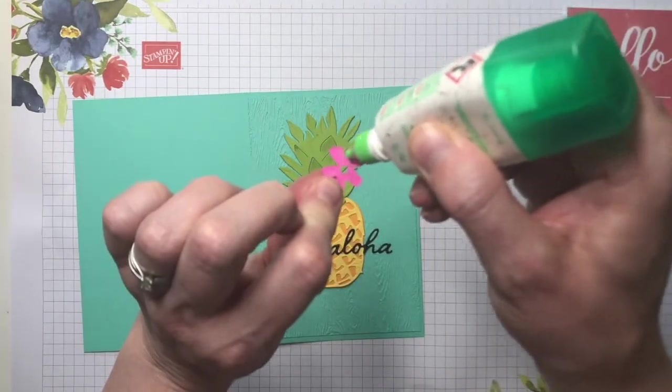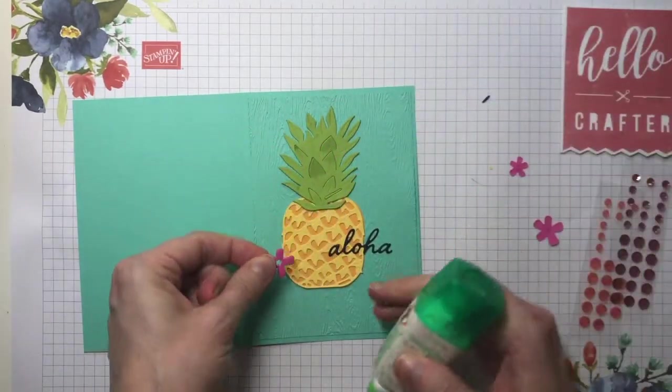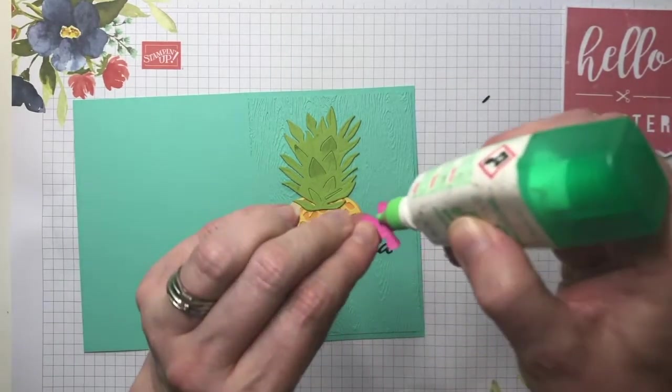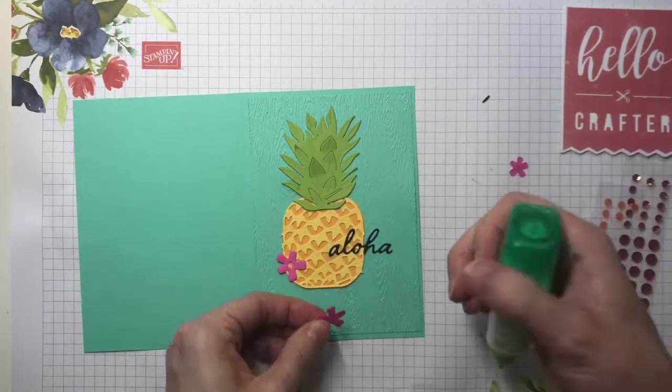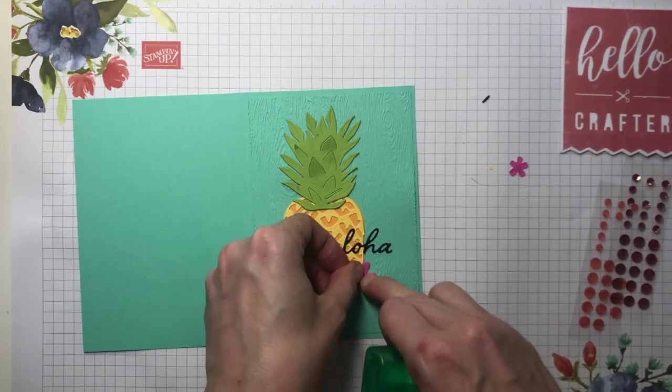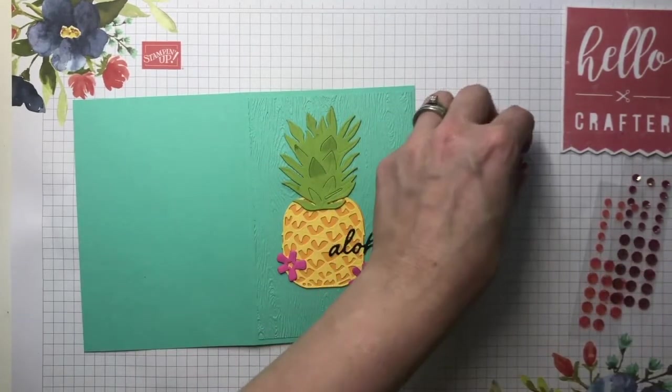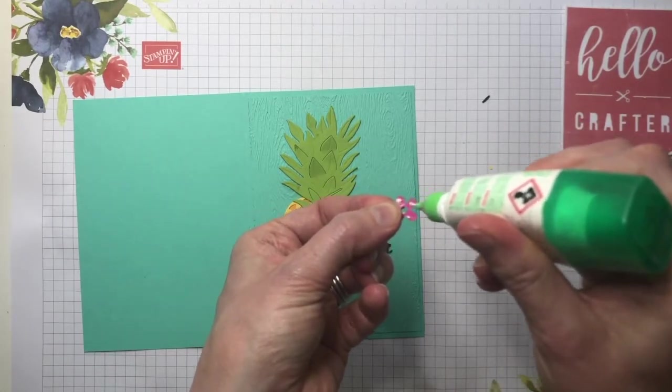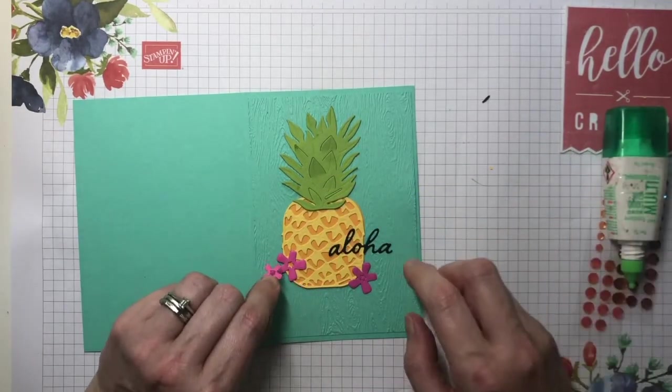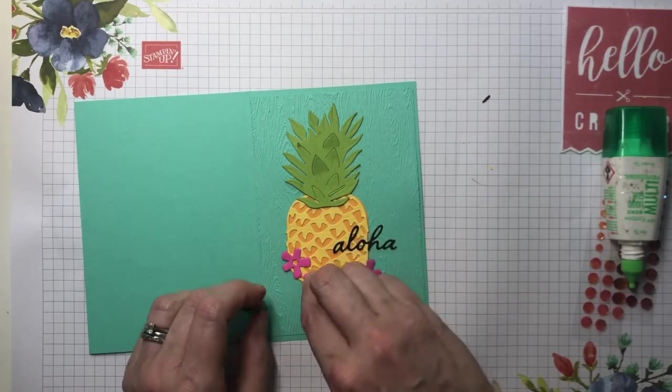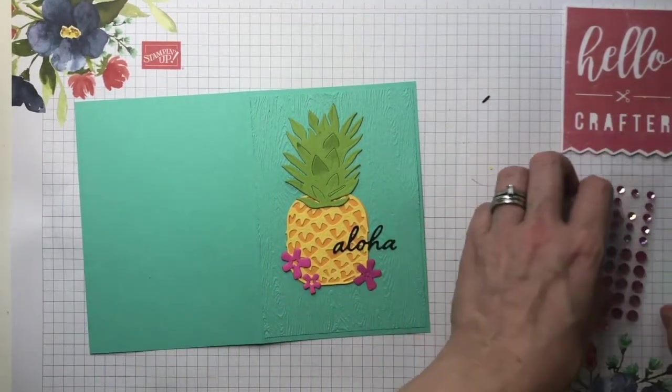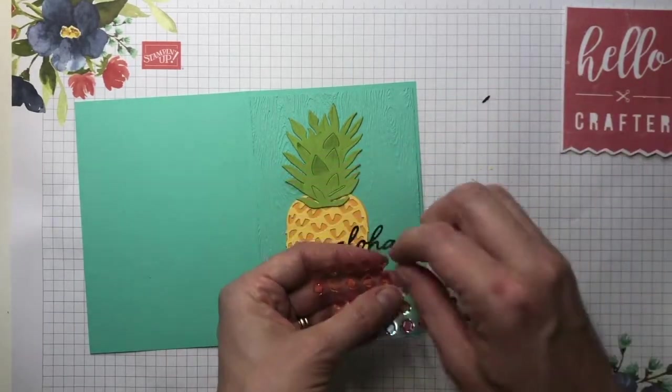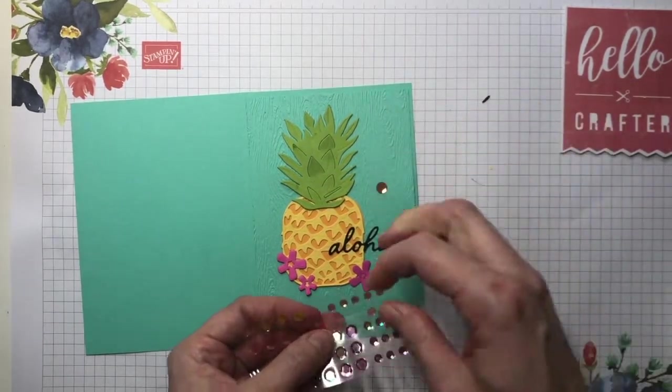Finally, just decorate with the flowers and these little gems can be added. And you can add these either to the centers of the flowers or just dotted around.